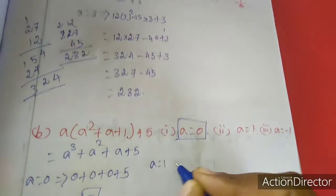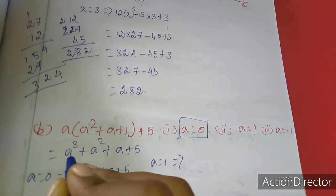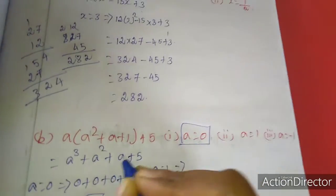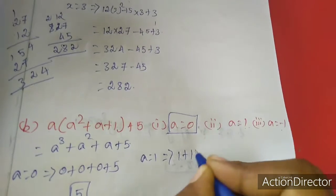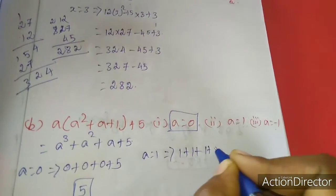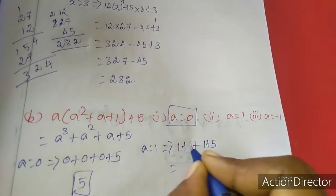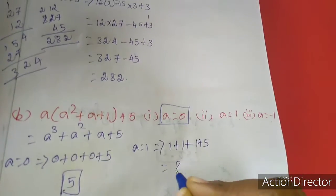Next one a equal to 1. Substitute: 1 cube is 1, 1 square is 1. So 1 plus 1 plus 1 plus 5. 1 plus 1 is 2, 2 plus 1 is 3, 3 plus 5 is 8.